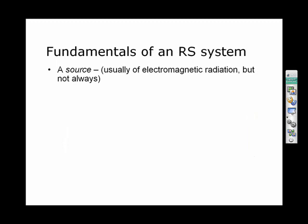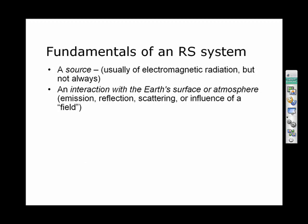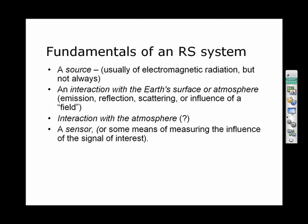Now, the fundamentals of a remote sensing system. In general, you always have some kind of source of electromagnetic radiation — sometimes from the object itself, sometimes from a secondary source such as the sun, and sometimes radiation you generate yourself from your own platform to illuminate the surface, much like a flash camera. There's also interaction with the Earth's surface — whether emission, reflection, or scattering — and there's always interaction with the atmosphere, even when you're looking at the atmosphere itself. And obviously there's a sensor to measure the actual signal of interest.